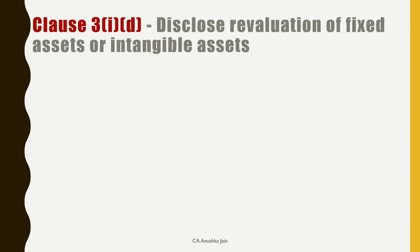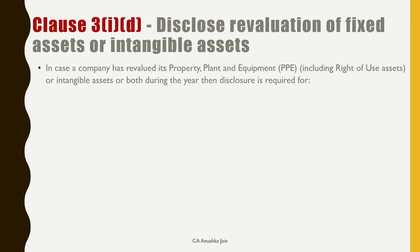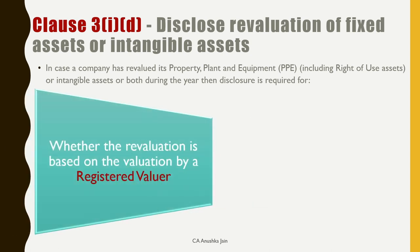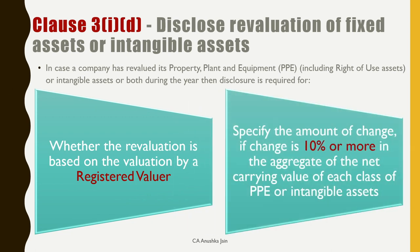Second new clause pertaining to fixed assets is 1D. It deals with disclosure of revaluation of fixed assets or intangible assets. Accounting Standard 10 ke hisaab se, companies may follow either cost model or revaluation model. CARO 2020 kehta hai that if a company has revalued its PPE or intangible assets during the year, then disclose whether the revaluation is based on the valuation by a registered valuer. Specify the amount of change if change is 10% or more in the aggregate of the net carrying value of each class of property, plant and equipment or intangible assets.